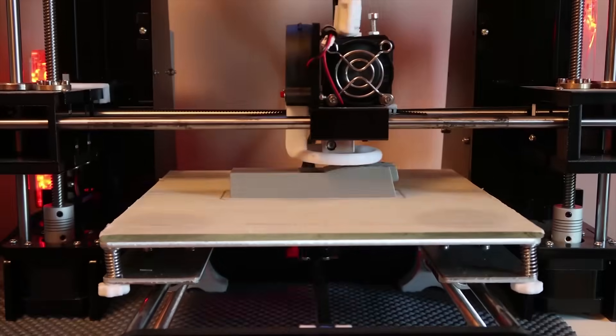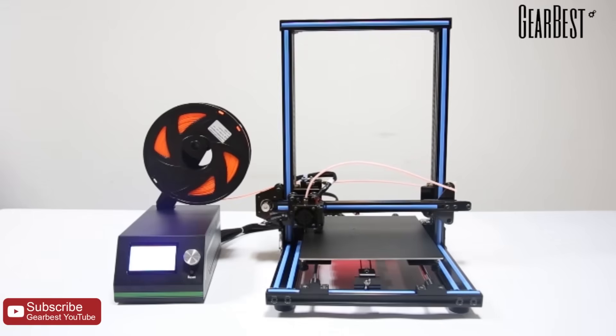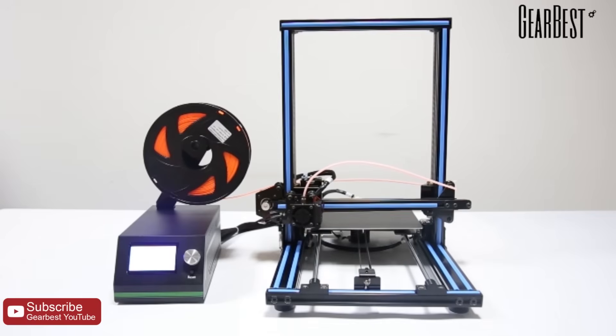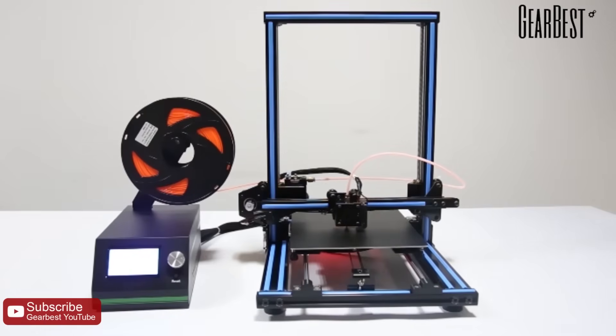The new 3D printer offers 220 by 270 by 300 millimeters print volume. The layer thickness support ranges from 0.1 to 0.4 millimeters.